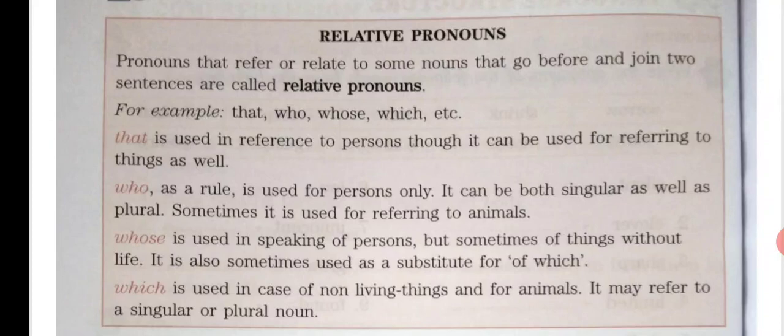The next is 'who.' As a rule, 'who' is used for persons only — zyada tar woh logon ke liye hi use kiya jata hai. It can be both singular as well as plural. Sometimes it is also used for referring to animals.